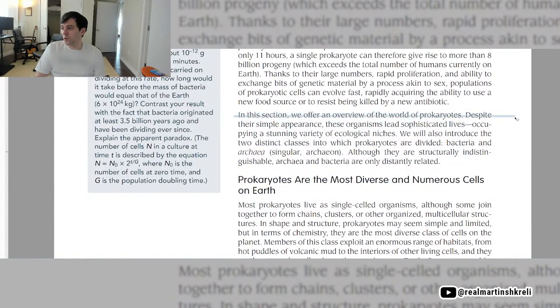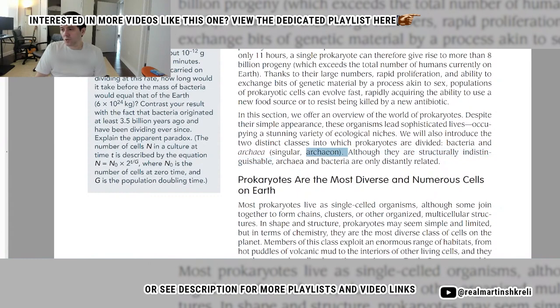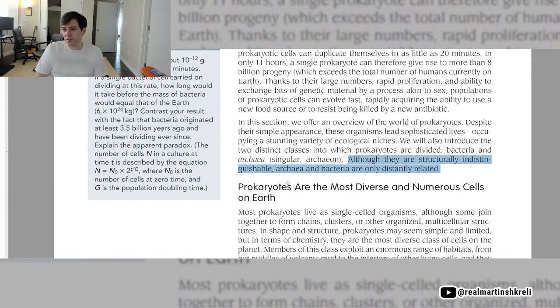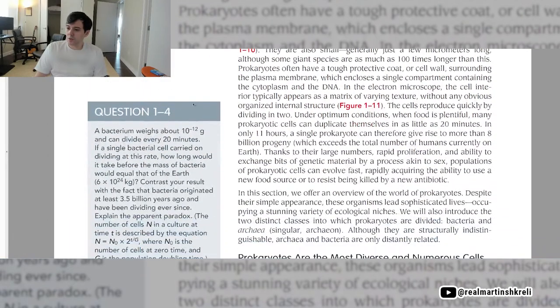In this section we offer an overview of the world of prokaryotes. Despite their simple appearance, these organisms lead sophisticated lives occupying a stunning variety of ecological niches. We will also introduce the two distinct classes into which prokaryotes are divided: bacteria and archaea. Singular is archaeon. Although they are structurally indistinguishable, archaea and bacteria are only distantly related. Bacteria come in different shapes and sizes. Typical spherical, rod-like, and spiral-shaped bacteria are shown and drawn to scale. The spiral cells shown are the organisms that cause syphilis, Treponema pallidum. Rod-shaped cells like E. coli and Salmonella, and spherical cells like Streptococcus. Two micrometers is the resolution here.